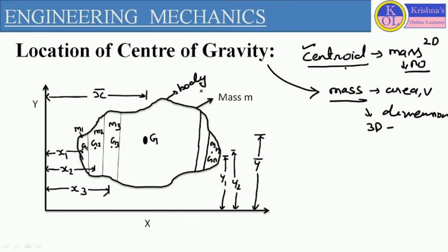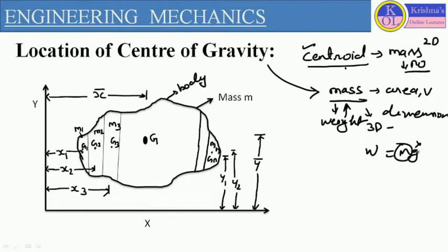This body will have everything — dimension, area, volume, and mass — as well as we can also consider weight. Weight we can define on the basis of mass: weight equals mg. So we can define it on the basis of mass multiplied by gravitational acceleration. This body having everything. Here, if we are considering the total mass of the body as m and defining the position of center of gravity by g, let us consider the center point of this three-dimensional body which has area, mass, and volume.